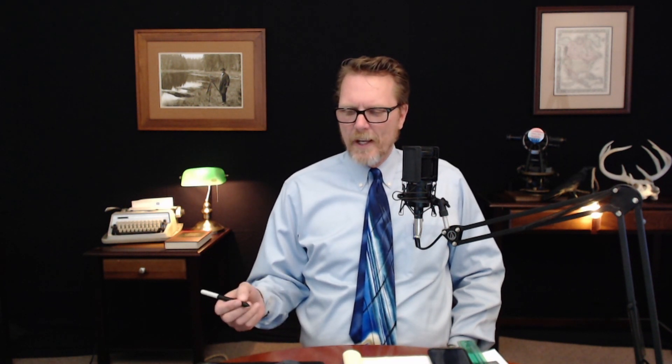Looking at the scenario shown here, your RTK GPS unit is a one centimeter, two parts per million unit. In the model I use today, it includes a base station that's two miles away. In the shorthand scenario, I have a two meter rod, a one centimeter, two parts per million unit with a base station two miles away. The two meter rod — 6.56 with an eight minute bubble — introduces an error of plus or minus a hundredth and a half. We have another two hundredths built into the PPM, and the one centimeter equals three hundredths.